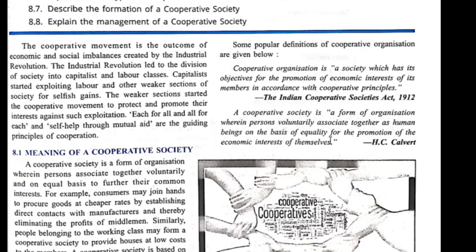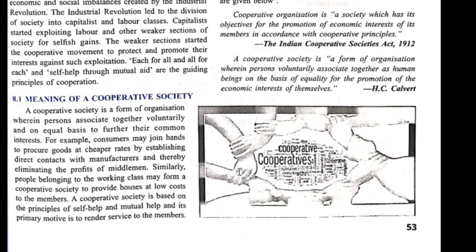What is the meaning of a cooperative society? A cooperative society is a form of organization wherein persons associate together voluntarily and on an equal basis to further their common interest. It is a group of people who come voluntarily by their own and form a group for their common interest. For example, consumers may join hands to produce goods at a cheaper rate by establishing direct contacts with manufacturers, thereby eliminating the profit of the middlemen.